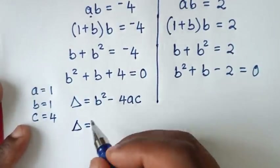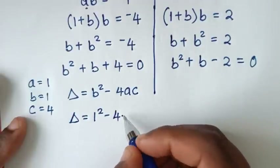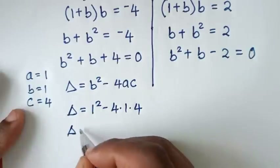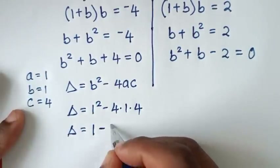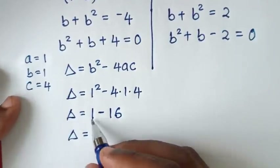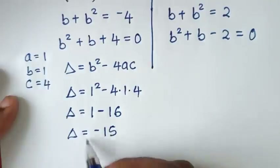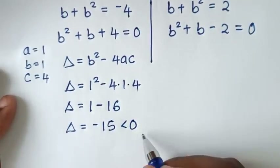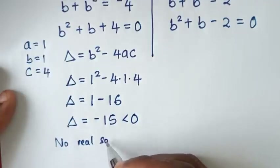The discriminant is equal to 1² - 4×1×4. So D = 1 - 16 = -15. Since this is less than 0, there is no real solution.